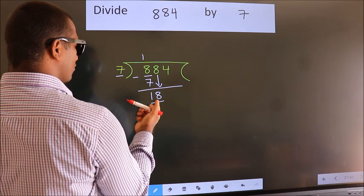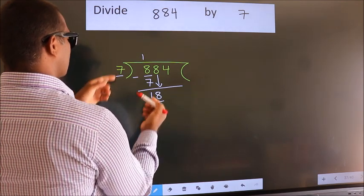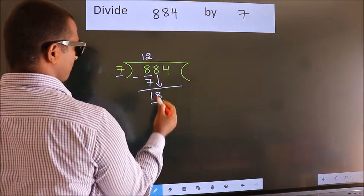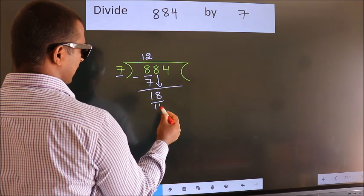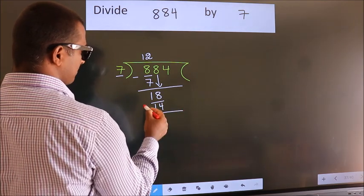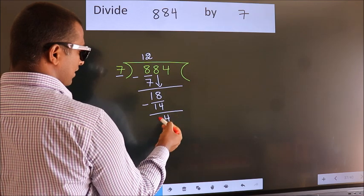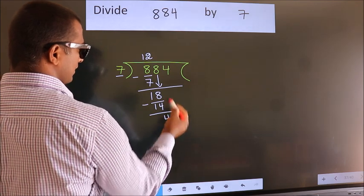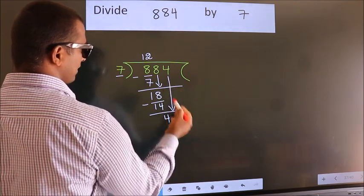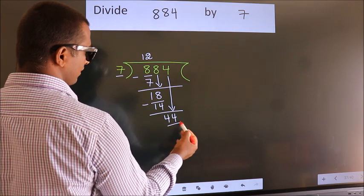A number close to 18 in the 7 times table is 7 twos, which is 14. Now we subtract. We get 4. After this, bring down the beside number. So, 4 down. So, 44.